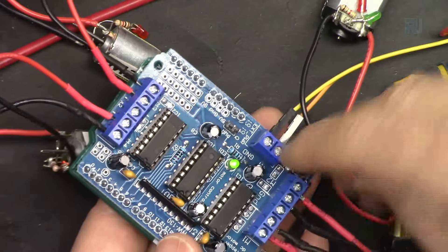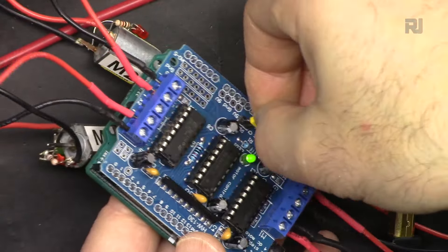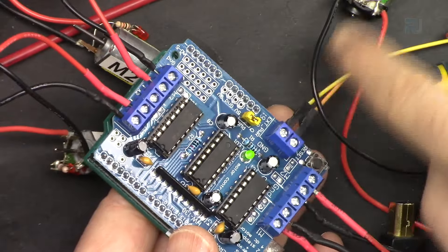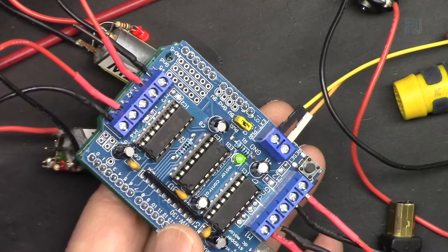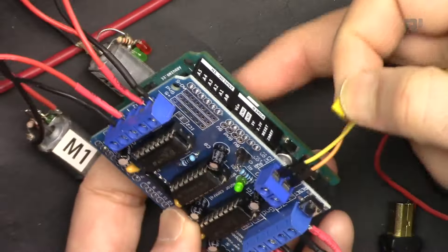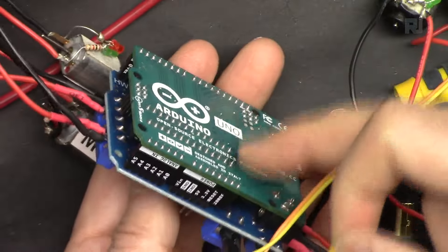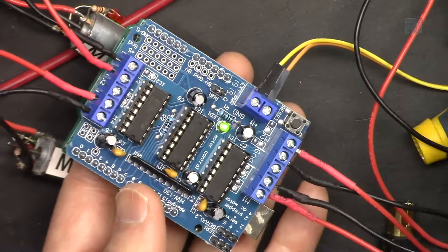Now external power is connected but the motors are not running because I did not put this jumper. Let me just put this jumper. Now the motors will have power, Arduino is powered up and they will run. So if I remove this, Arduino will not receive any power. Arduino Uno that's at the bottom will not receive power, so this will not run.